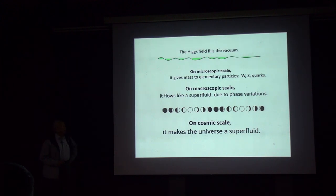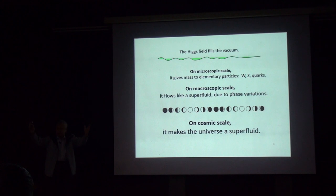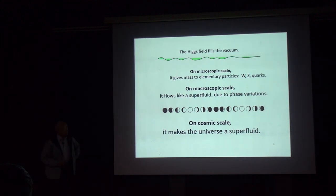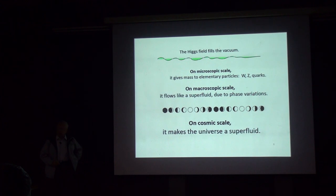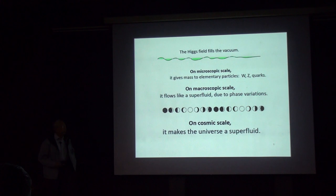Particle physicists don't think about what happens on a macroscopic scale. On a macroscopic scale, it flows like a superfluid, because it has a phase — it's a complex field — and the phase variation represents superfluid flow. On a cosmic scale, it makes the entire universe a superfluid.